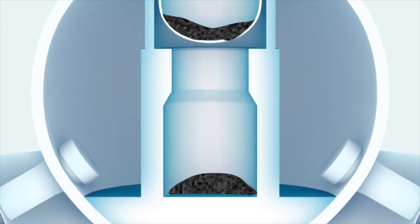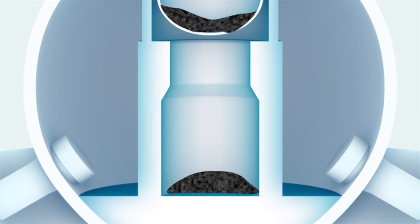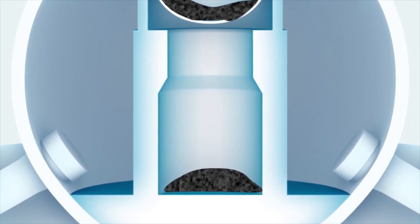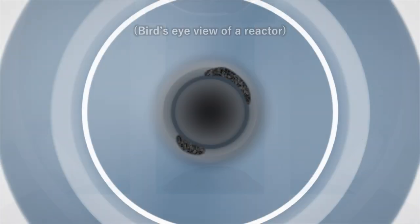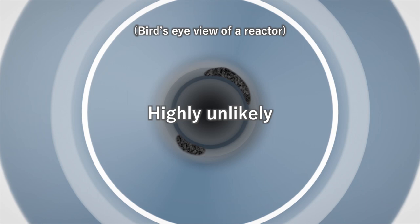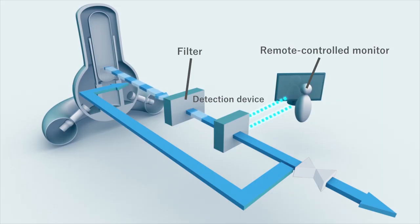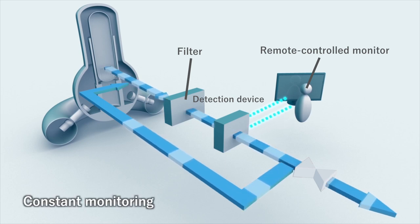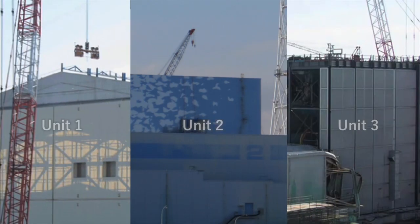The possibility of criticality occurring cannot be discounted completely if a series of coincidences happens at the same time. However, the chance that criticality will occur again in Units 1 through 3 is extremely small. To deal with any event of criticality occurring, a new system was installed which monitors the situation constantly and can detect the radioactive materials which would be generated. We will continue to confirm that no criticality is occurring in Units 1 through 3.